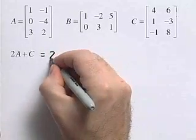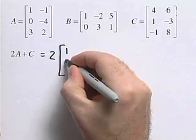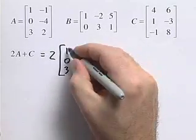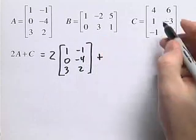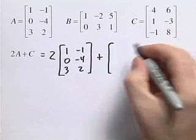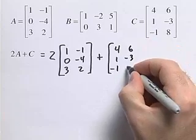We're going to write that down in matrix form first. We have 2 times the matrix A, so we're going to rewrite that: 1, 0, 3, negative 1, negative 4, 2, plus matrix C: 4, 1, negative 1, 6, negative 3, 8.